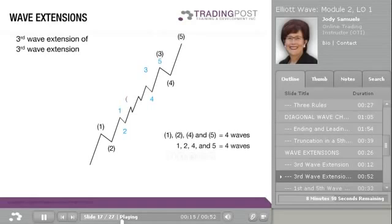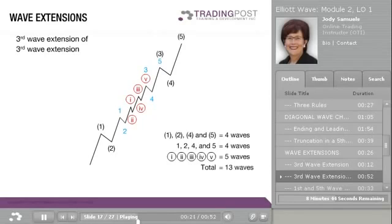This extension is a 13-wave sequence. Within the initial 5-wave sequence, Wave 3 extends twice. Notice that none of the three Elliott Wave rules have been broken. Notice too that in the 13-wave sequence, we have a series of 1-2 patterns — specifically a 1-2, 1-2, 1-2 pattern before continuing on.